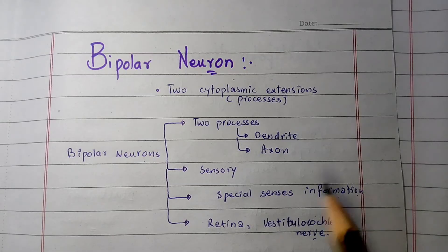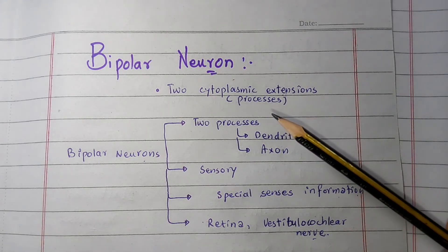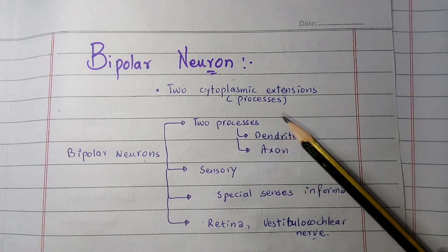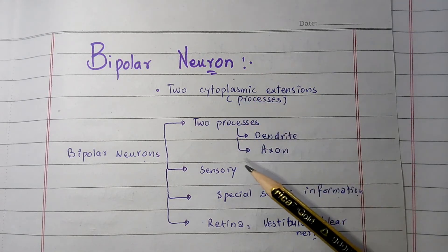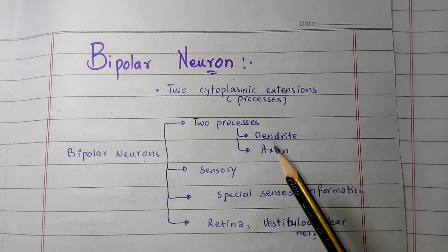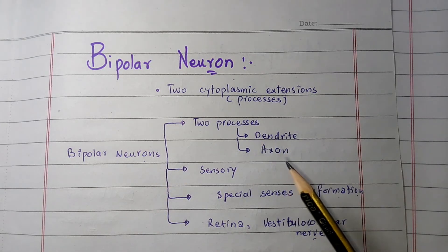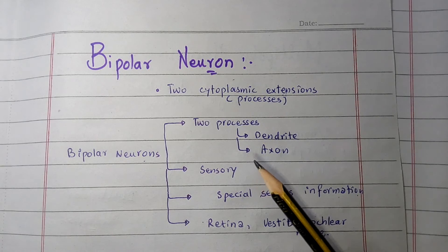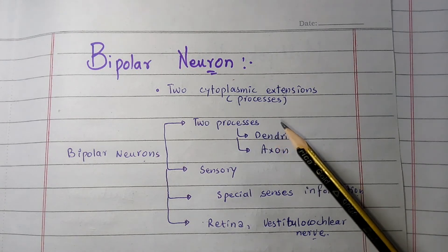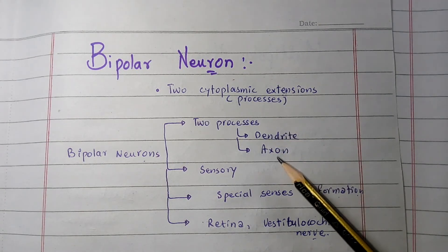Bipolar neurons are neurons that have two cytoplasmic extensions or processes attached to their cell body, and are structurally classified as bipolar neurons. Bipolar neurons have only two processes — the dendrite and the axon — that extend in opposite directions from the cell body. One process or neurite is called the dendrite and the other is the axon.